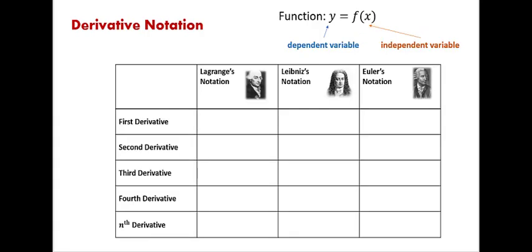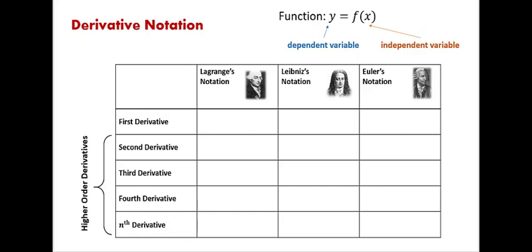And now the notation. Generally there are three different notations when it comes to derivatives: Lagrange's notation, Leibniz's notation, and Euler's notation. We're going to organize those different notations into a table, listing the first derivative, second derivative, third derivative, fourth derivative, and general nth derivative. All derivatives starting with the second derivative and up are called higher order derivatives.